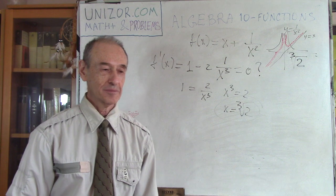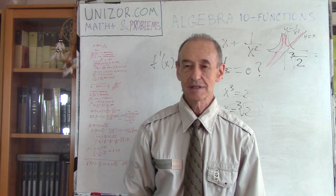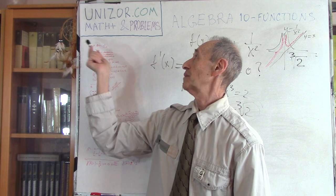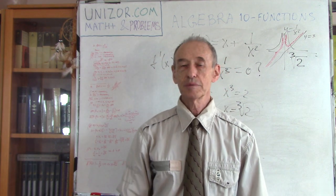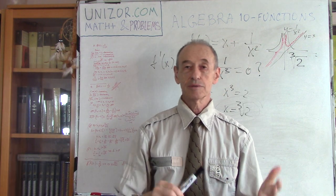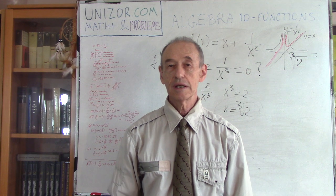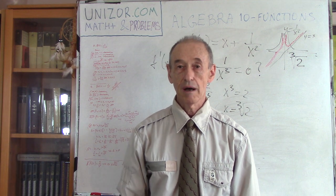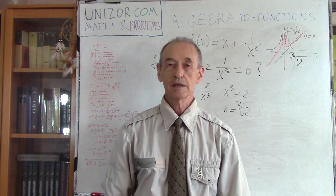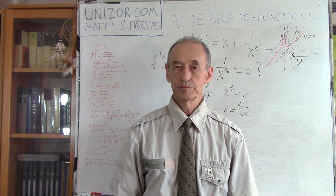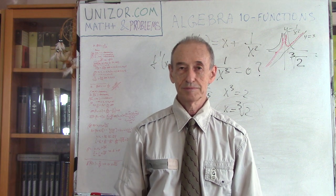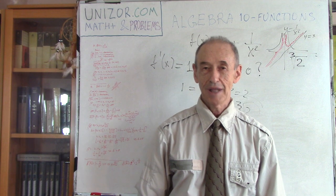Basically, what I'm encouraging you to do is go back to the website, unizor.com, choose Math Plus and Problems — this is Algebra number 10, where we research functions — read the problems again and try to do it yourself. Go through all these calculations on a plain piece of paper; it's very helpful. All right, that's it. Thank you very much, and good luck.